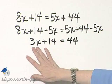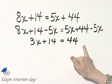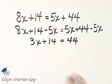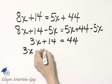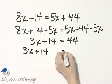I've got my variable term over here. Let's get constants on the right side. I'll subtract 14 from both sides. Here's the left side. Here's the right side.